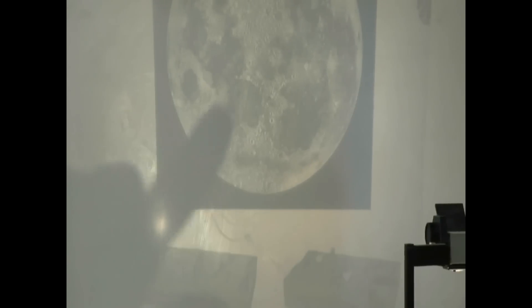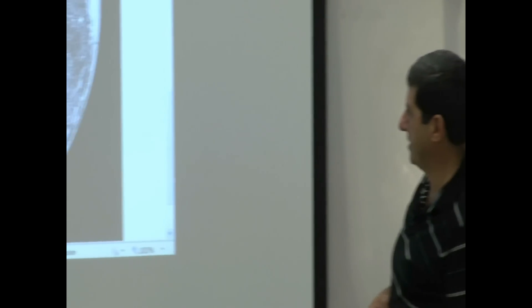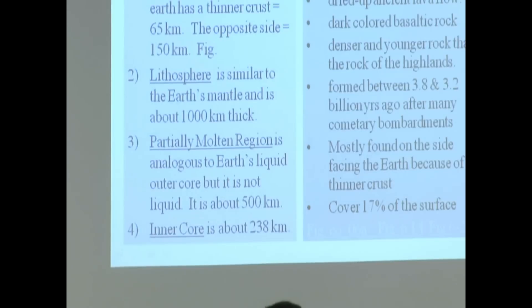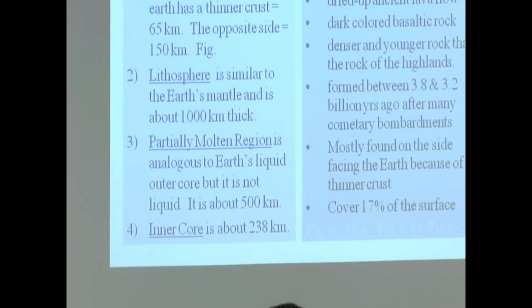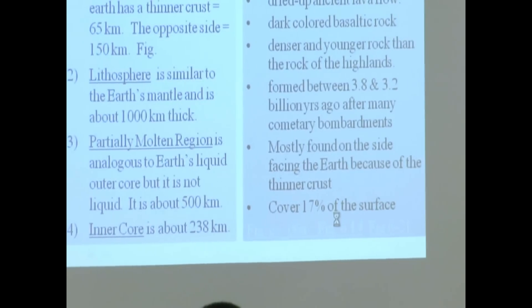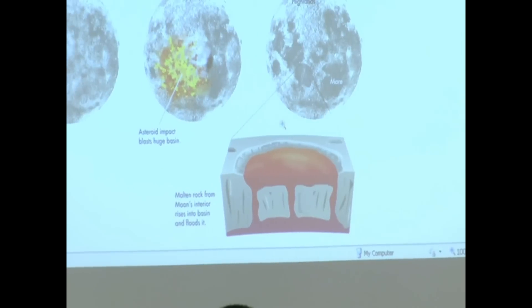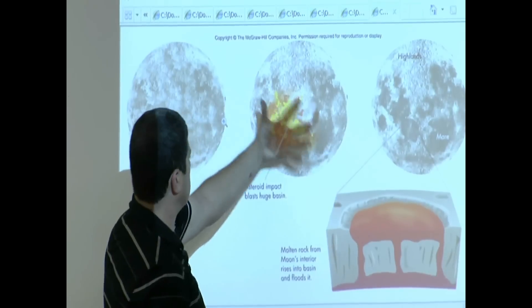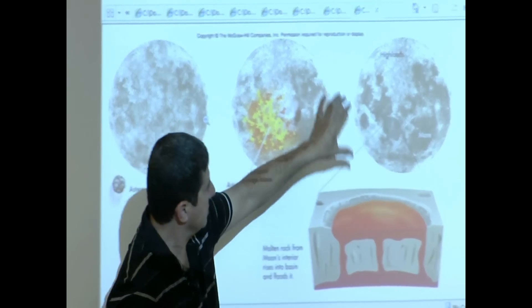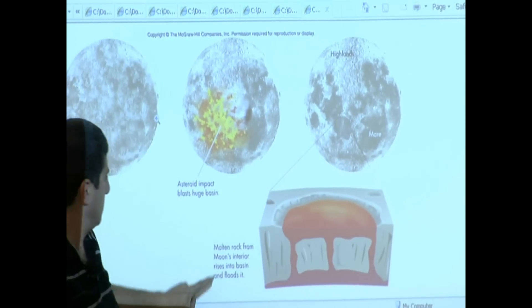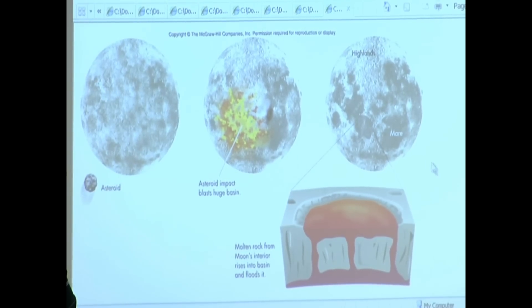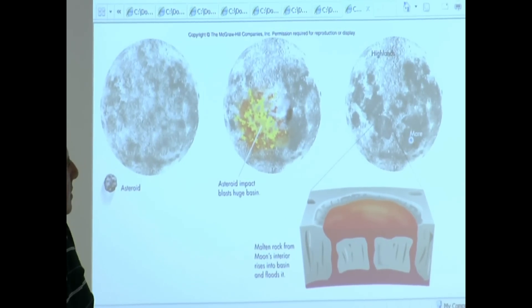So there are these things right here. That's a really nice picture. I love that one. We're kind of fortunate because we live on the side that has that better picture. Same idea here. Asteroids impact. The lava flows out. Then they settle down. Molten rock from the moon's interior rises in the basin and floods it. And then that's how you form the mare.